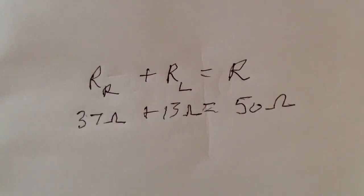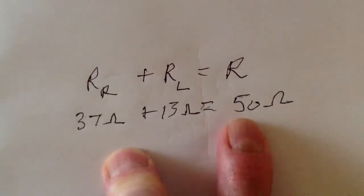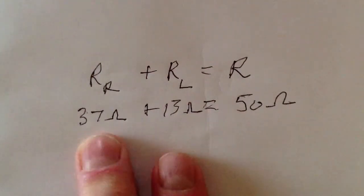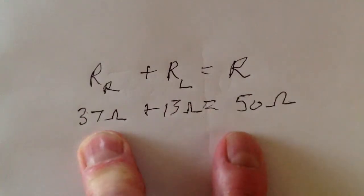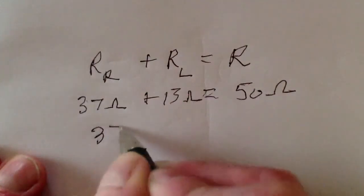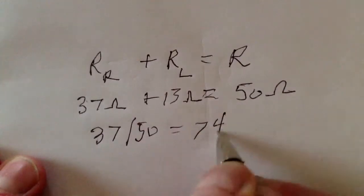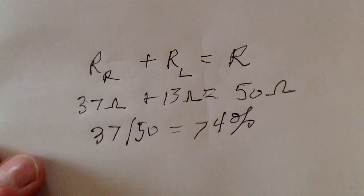So, what's the efficiency? Well, you add together the radiation resistance and the loss resistance, and then you divide the radiation resistance by the total resistance. So it's 37 over 50, or 74 percent.